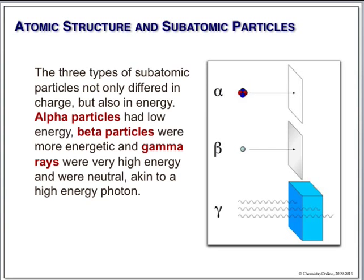The alpha particle, with two protons and two neutrons, is the weakest of the particles - very low energy. In spite of being very low energy, it's also extremely toxic. Of all the different types of radiation, this is the most highly ionizing. When it moves through your tissue, it tends to rip electrons off of anything in sight and that can cause tremendous DNA damage. A simple piece of paper or even your skin will stop an alpha particle.